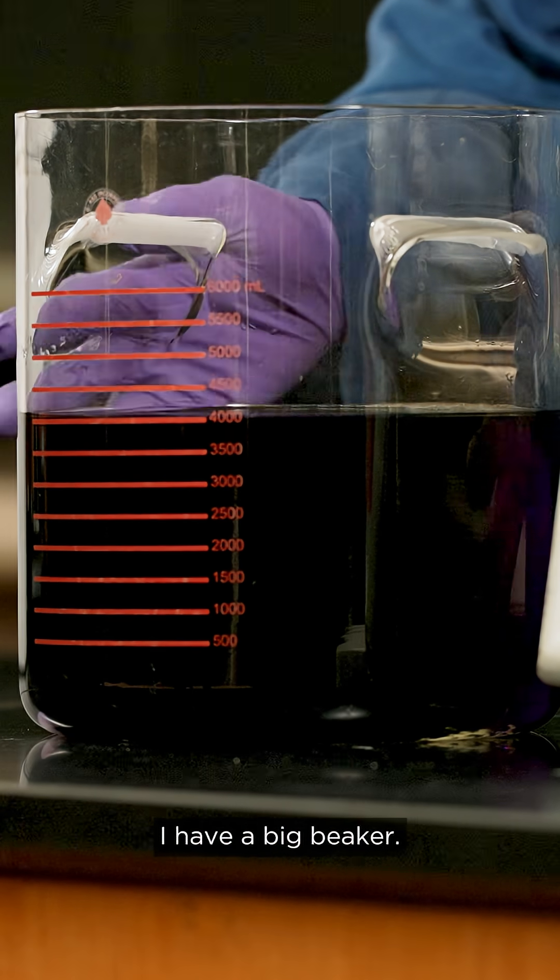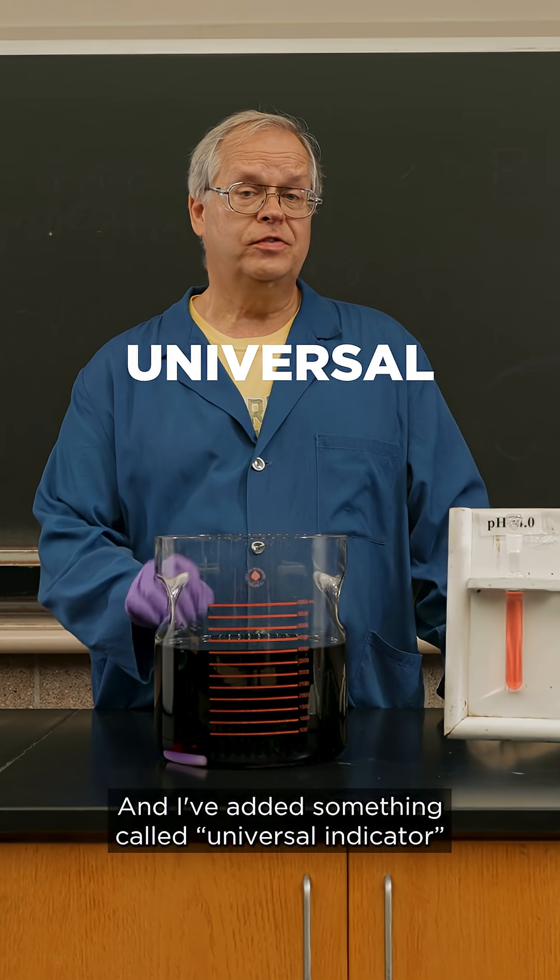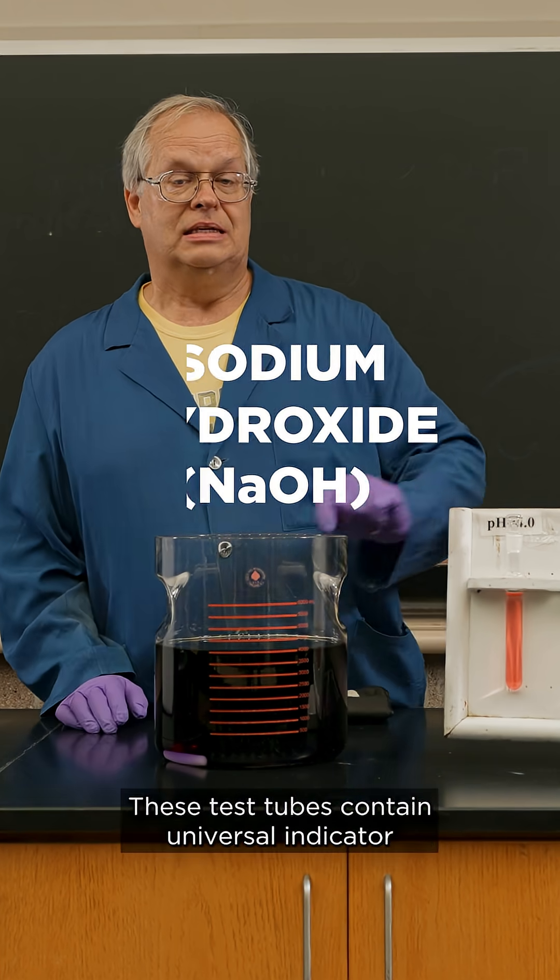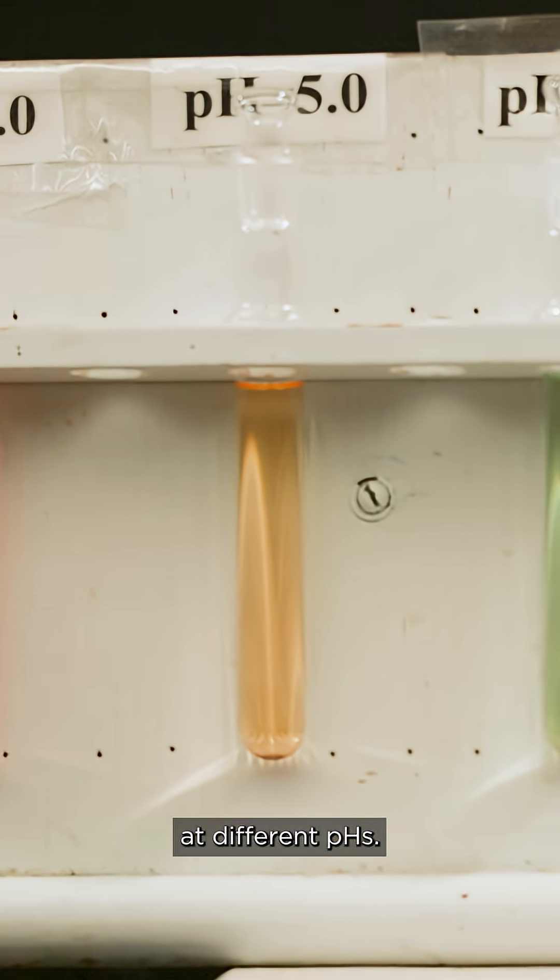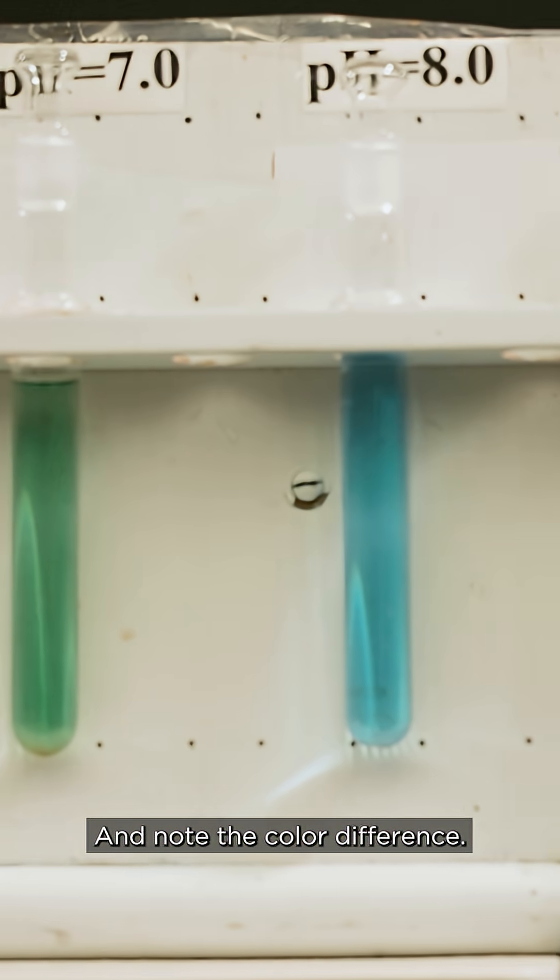I have a big beaker, it's filled with water, and I've added something called universal indicator and a little bit of sodium hydroxide. These test tubes contain universal indicator at different pHs, and note the color difference.